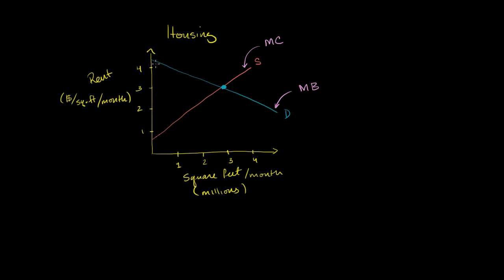So if the price is anywhere between the marginal benefit and marginal cost, the consumer gets some surplus and the producer gets some surplus. The market as a whole gets a lot of surplus. Producers will keep producing more and more units as long as marginal benefit is higher than marginal cost — all the way up to 3 million square feet per month.